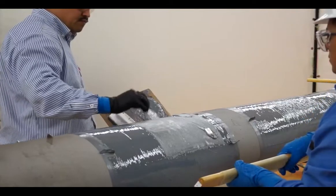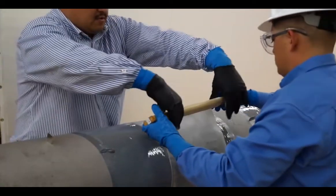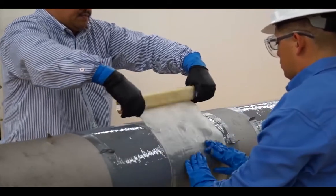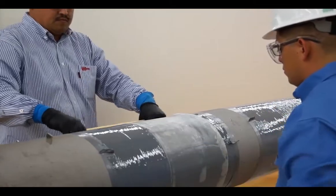Apply additional primer, then apply an isolation fiberglass layer on top of the markers. Ensure the fiberglass isolation cloth is applied tightly around the pipe.